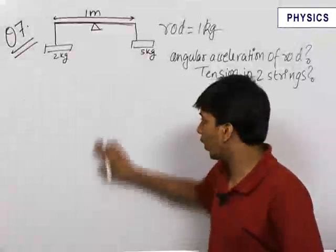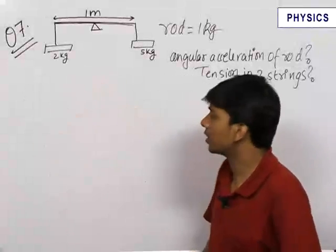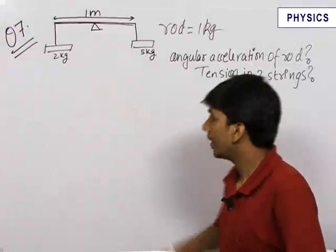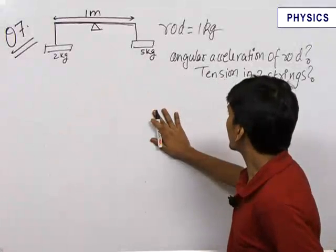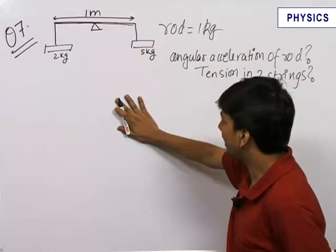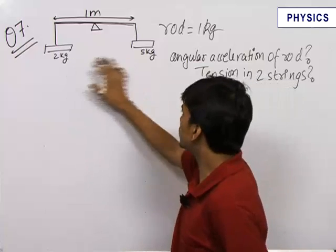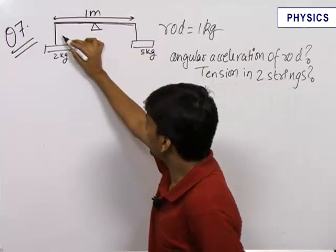This is another question which involves simple but careful application of the formula torque equals I alpha. In this question, we have a rod of 1 kg and 1 meter length. On the two sides of the rod, there are two masses 2 kg and 5 kg attached by strings.